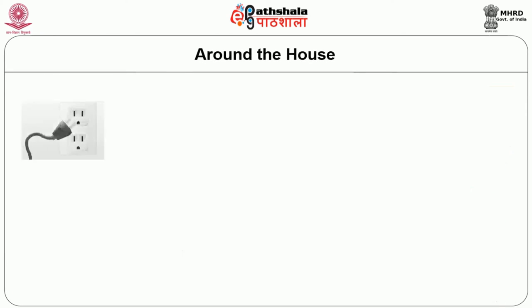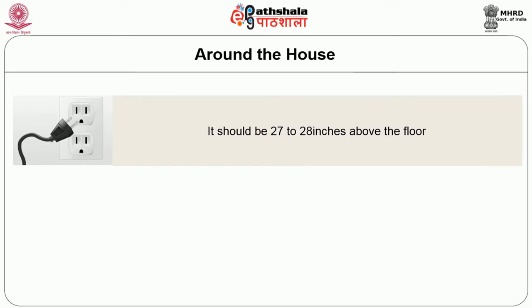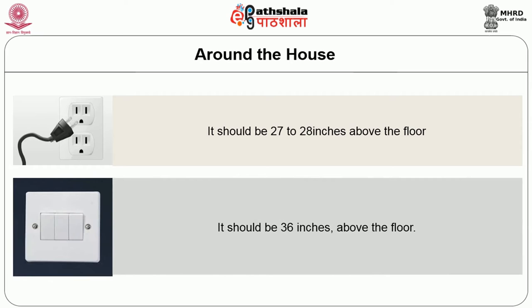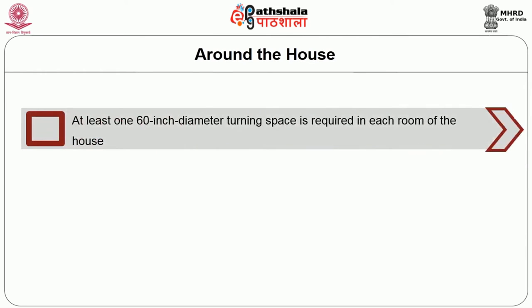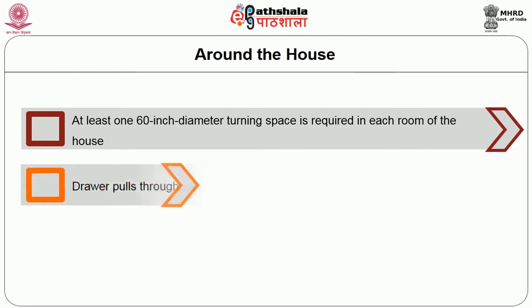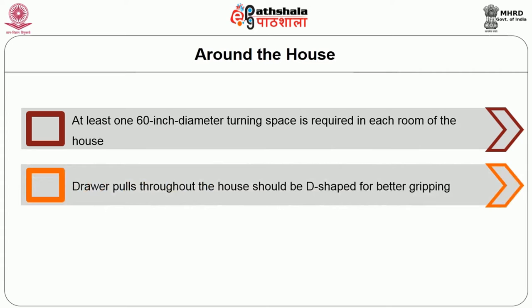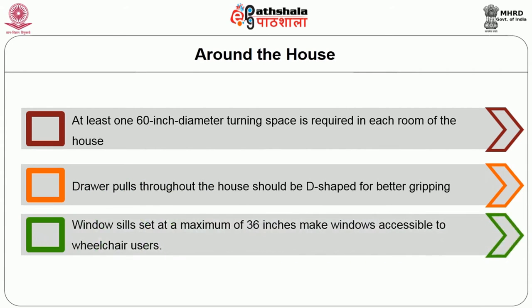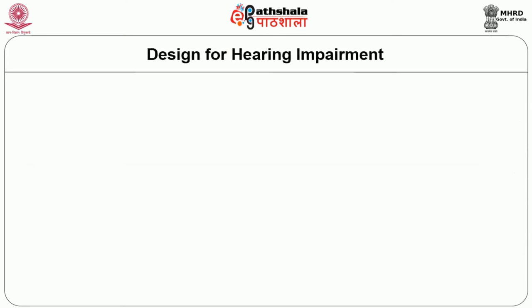Around the house: Electrical outlets should be 27 to 28 inches above the floor; switches should be 36 inches above the floor. At least one 60-inch diameter turning space is required in each room of the house. Drawer pulls throughout the house should be D-shaped for better gripping. Window sills set at a maximum of 36 inches make windows accessible to wheelchair users.